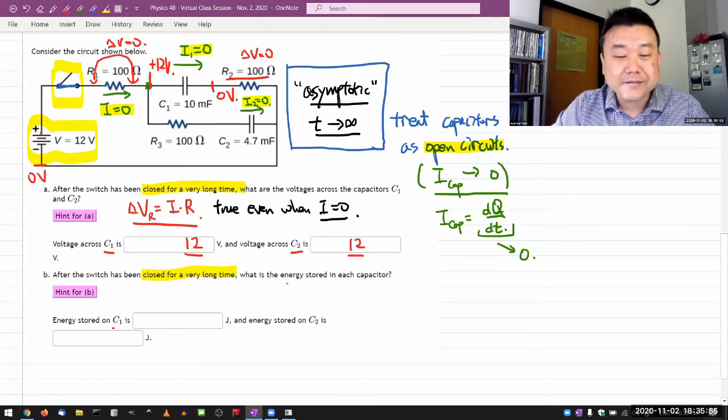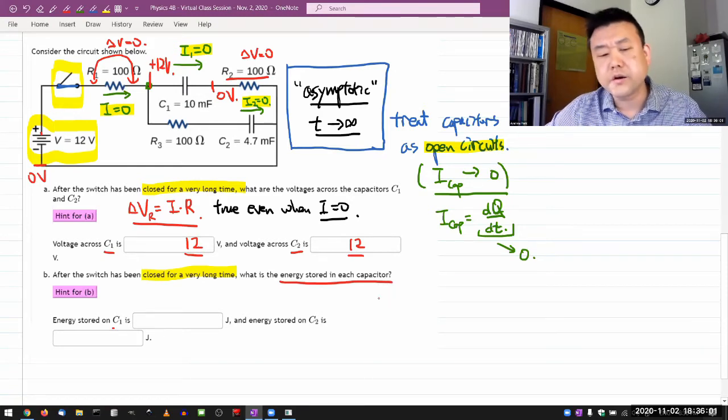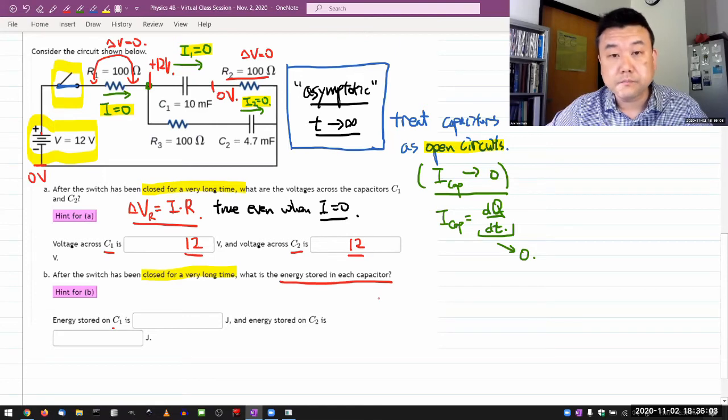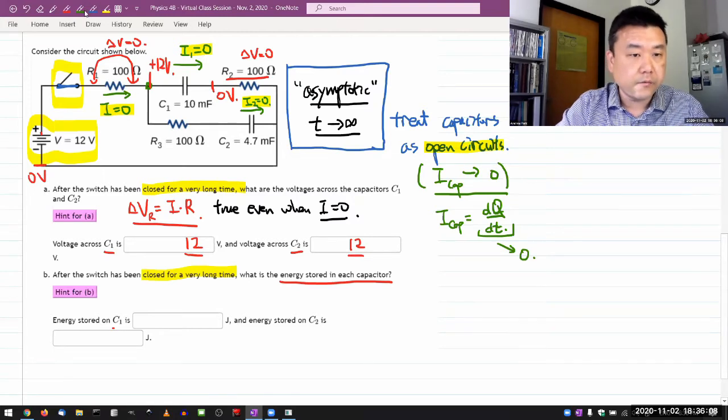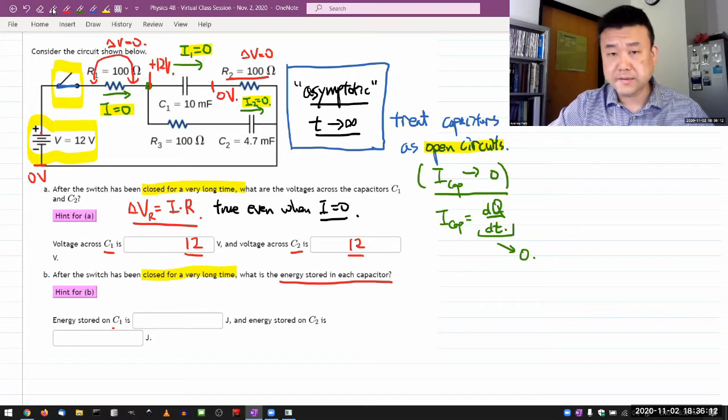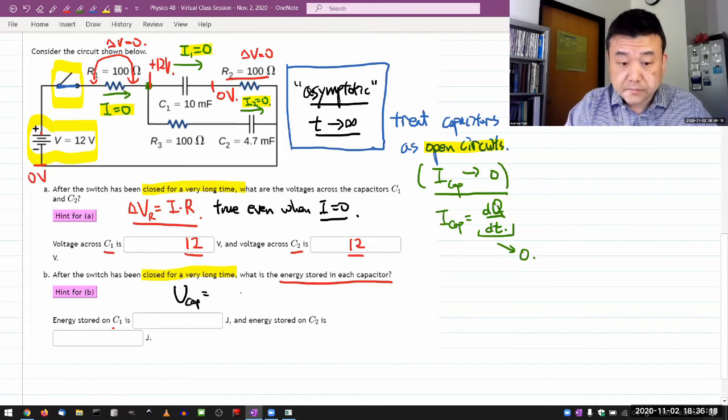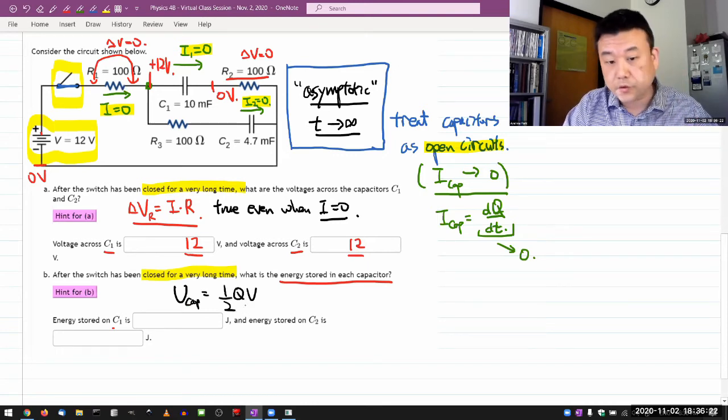It asks what is the energy stored in each capacitor. What you need to use there is the formula for potential energy stored on a capacitor. I always like to write it down in the three forms. Potential energy of a capacitor is the charge times voltage, and there's this factor of one half - don't forget it.